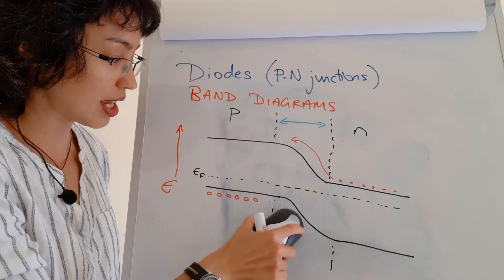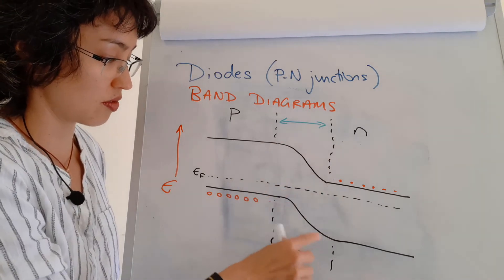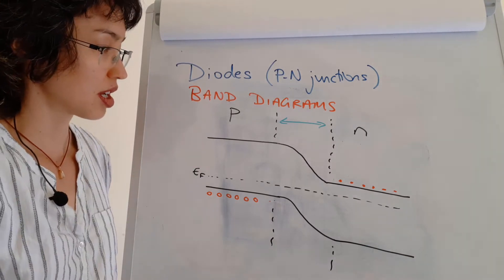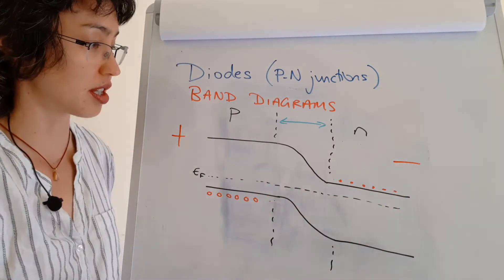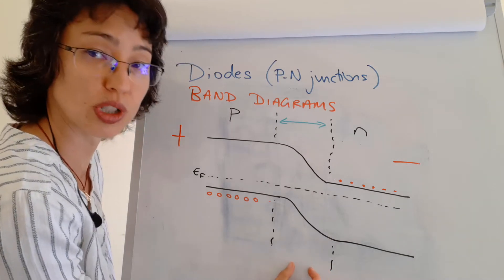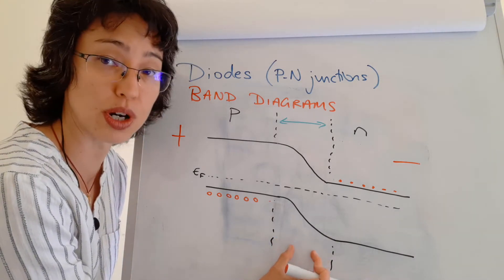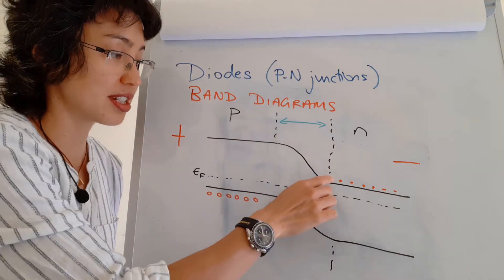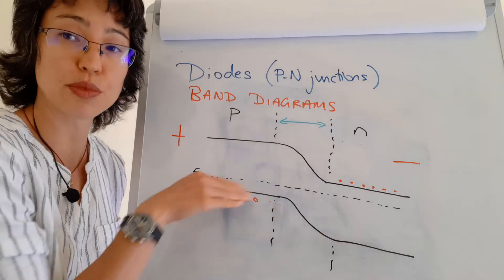That's why in the depletion region you don't end up with any charges — they would need energy to overcome these two barriers. When I apply a forward bias, with the positive terminal on the P-side and negative on the N-side, the depletion region becomes smaller and the barrier becomes smaller too. The bending of the bands becomes more shallow, meaning electrons don't require as much energy to overcome the barrier and get to the other side.